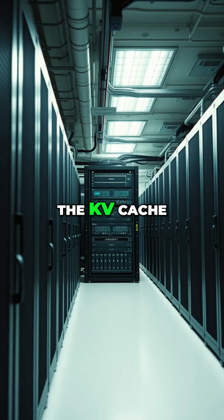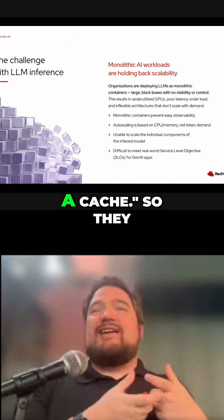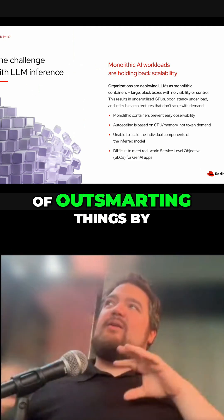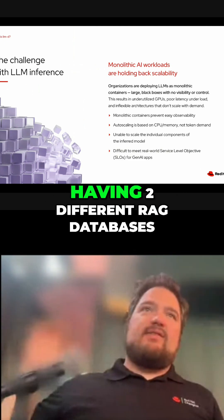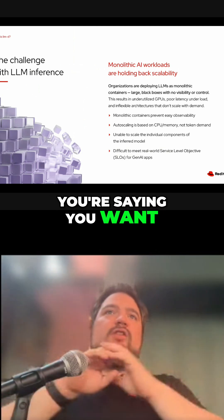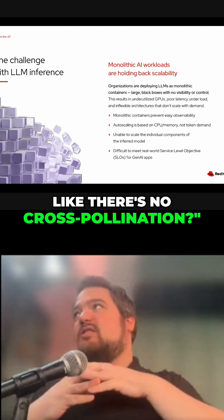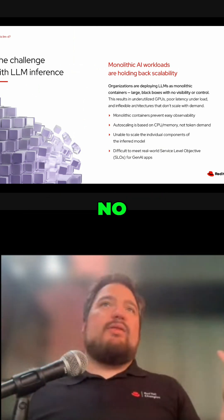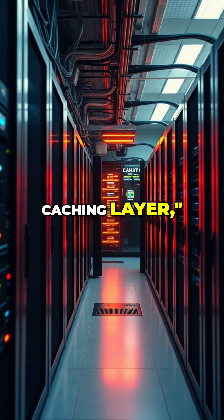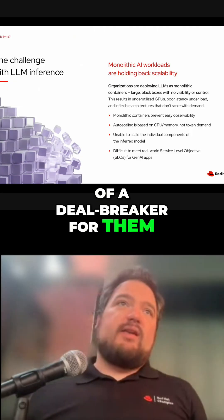They asked if that was possible, and at the time I said, actually, no — because of the KV cache. They would ultimately share a cache. So they thought they were outsmarting things by having two different RAG databases. But I said, you're saying you want no cross-pollination. They agreed, and I told them, no, there is cross-pollination. It's happening at a caching layer.